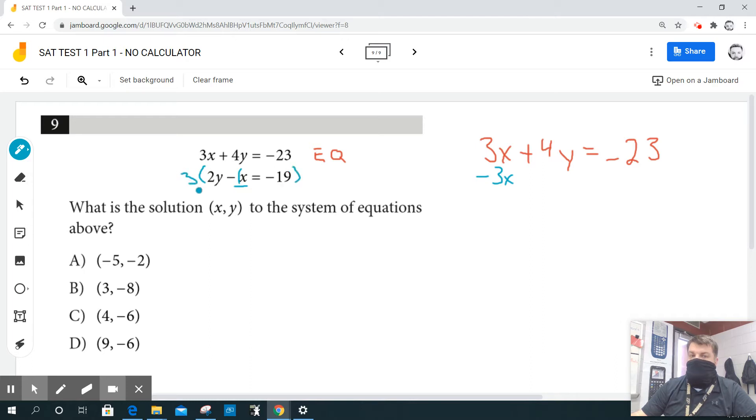So my 3 times negative 1x is negative 3x. What's 3 times 2y? Positive 6y. And then, this is a little bit more challenging question, what's 3 times negative 19? Well everybody knows that's negative 57, right?